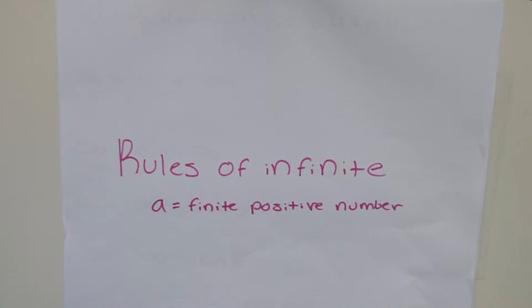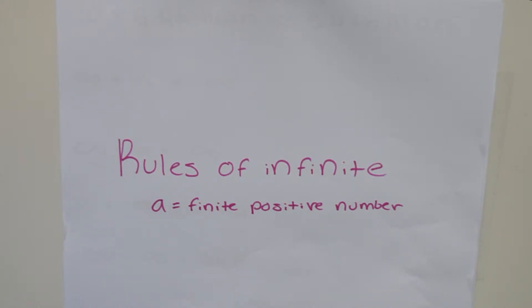Hey guys, it's V. In this video I just wanted to touch base on the rules of infinity. When we use the word infinity, it is important to realize that we are talking about a number that is either really really huge and positive or really really small and negative. Thus we have to specify the type of infinity — positive or negative. These quantities have such a large magnitude that finite numbers are insignificant. However, this does not mean that all infinities are the same; some infinities can be greater or smaller than others, and thus we cannot make the assumption that infinity is a definite quantity.